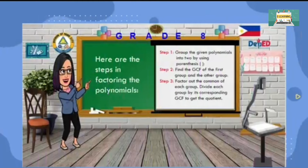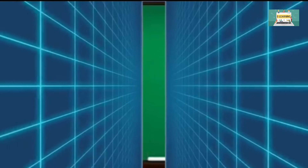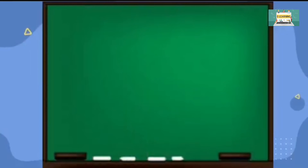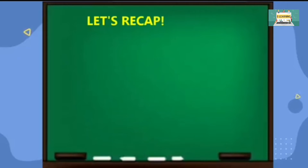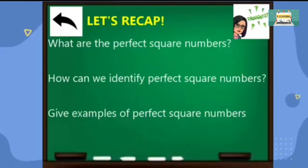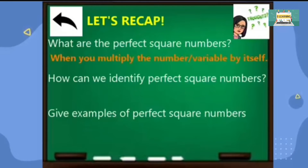Here are the steps on how we factor polynomials by grouping. Before we proceed to the next lesson, let us have a recall of your basic idea about perfect square numbers. Take note of the three questions posted on this screen. When you multiply the numbers or variables by itself, then it is a perfect square. The factors are the same number or variable.